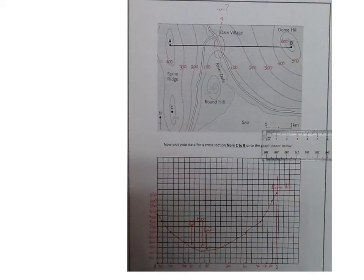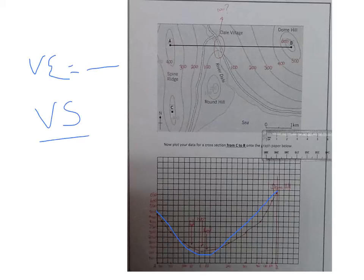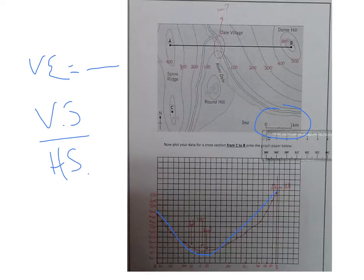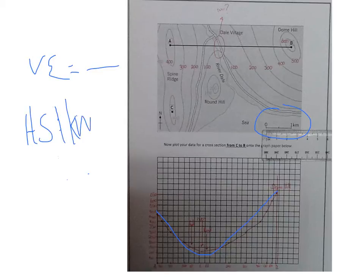Those of you that have seen my cross-section video will notice I'm using the same map. I've constructed the cross-section here and I'm going to use this map to calculate the vertical exaggeration. Cross-sections and vertical exaggeration often go hand in hand and students are asked to calculate both. The first thing you need to know — from the formula — is the vertical scale and the horizontal scale. The horizontal scale is always going to be given to us on a map. In this instance, one kilometre equals two and a half centimetres.